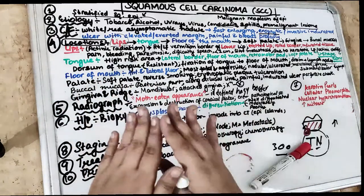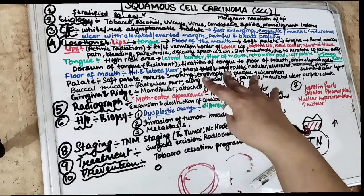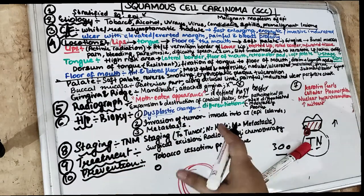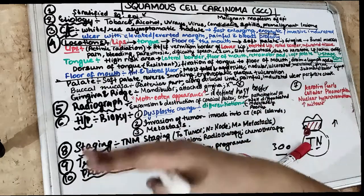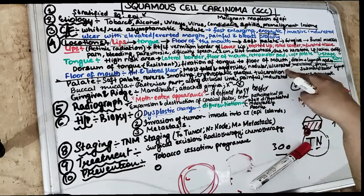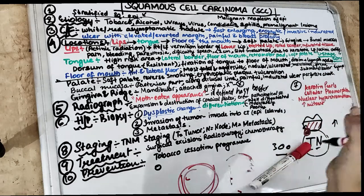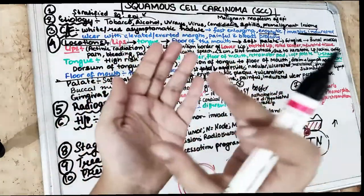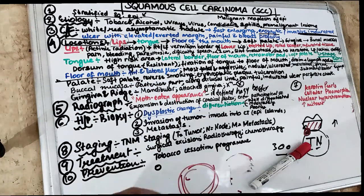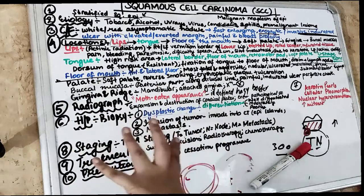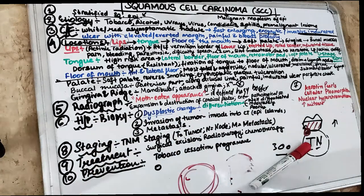The floor of the mouth — anterior and especially the lateral floor of the mouth — is involved. This is the most fatal and aggressive location because when it occurs in the floor of the mouth, it spreads via lymphatic spread and metastasizes, involving other organs and spreading to the neck. How it looks: nodular, ulcerated, indurated. The lesion has indurated margins — an ulcer with an elevated or everted margin surface. Initially it looks white or red and asymptomatic because of keratin, and later on it can become an ulcer.